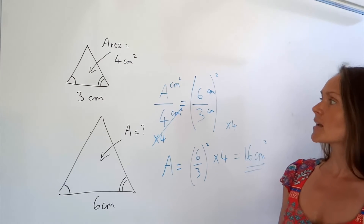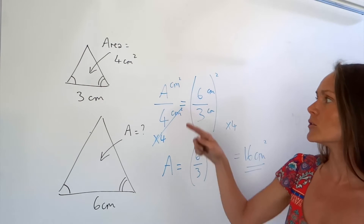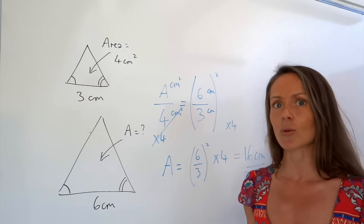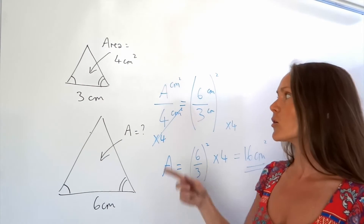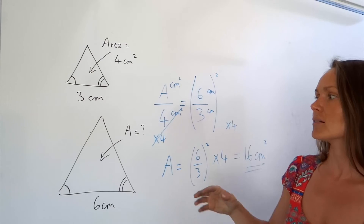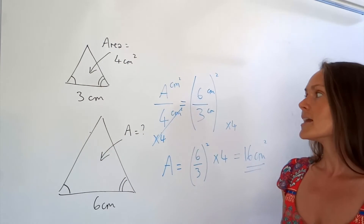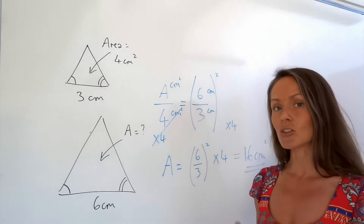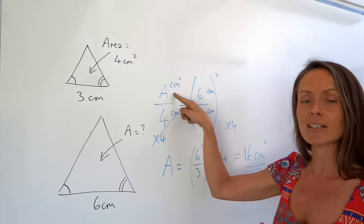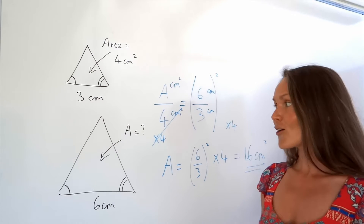Just something to point out before moving on: notice how I put capital A on top. It doesn't actually matter which way round you divide — big over small or small over big will give you the same answer. It's just easier to rearrange and solve if you've got your unknown letter as the numerator, so I'd advise you to do that if you can.